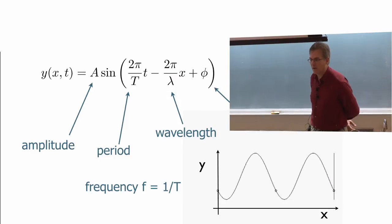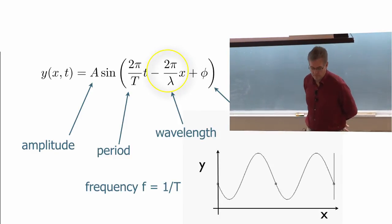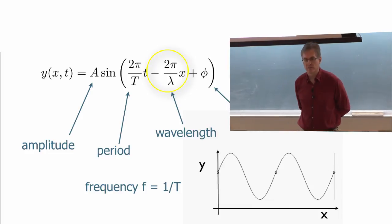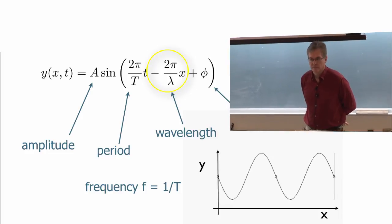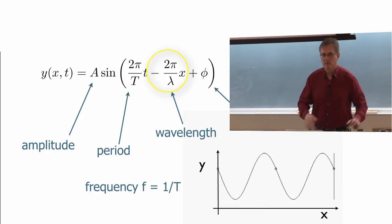The new thing here is that we have this position dependent term minus 2π x over lambda. And it results in this wave pattern that's moving from left to right.